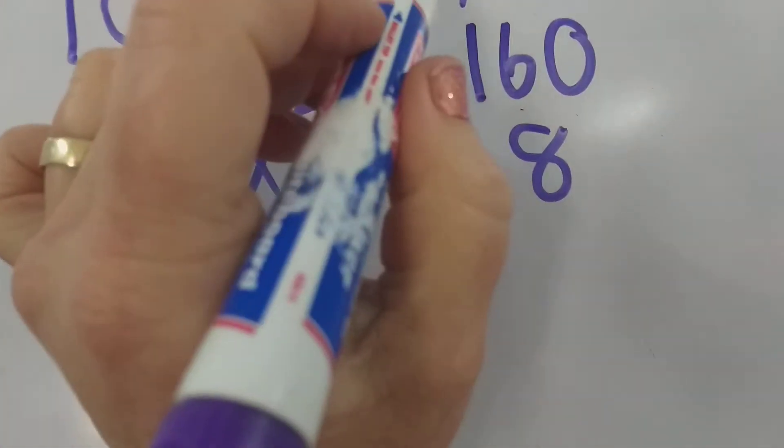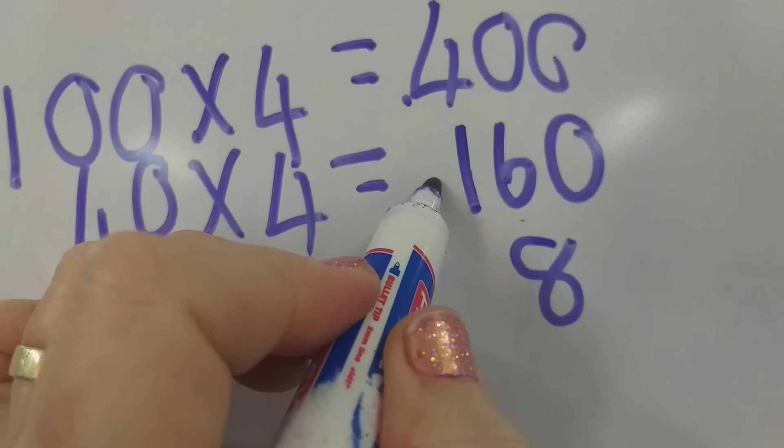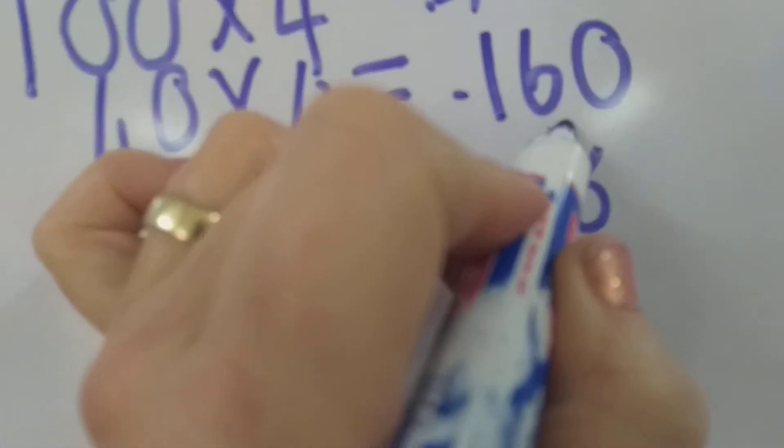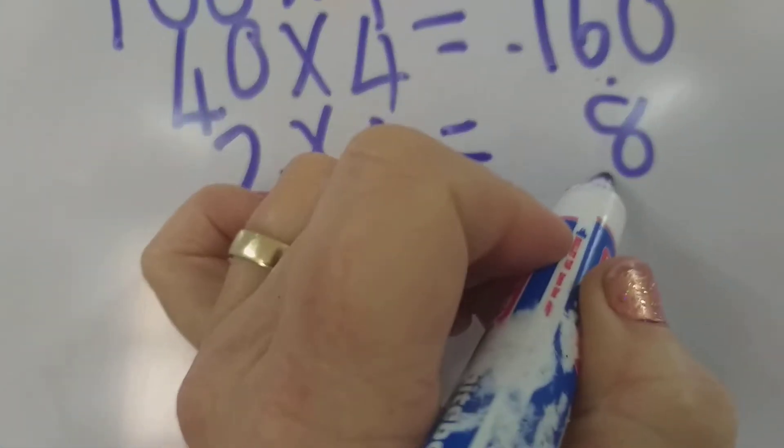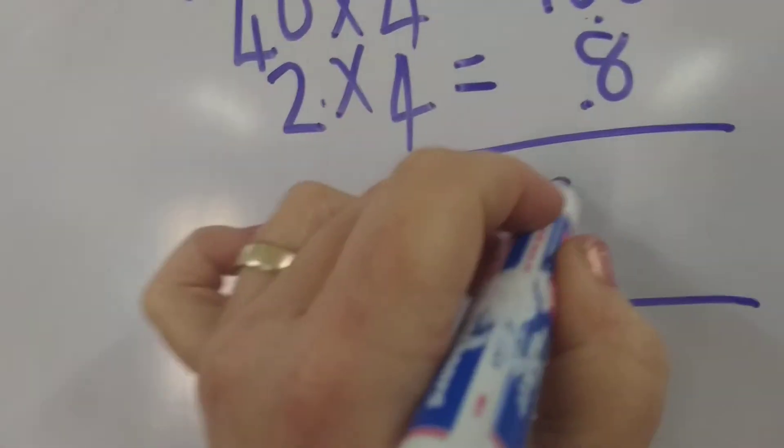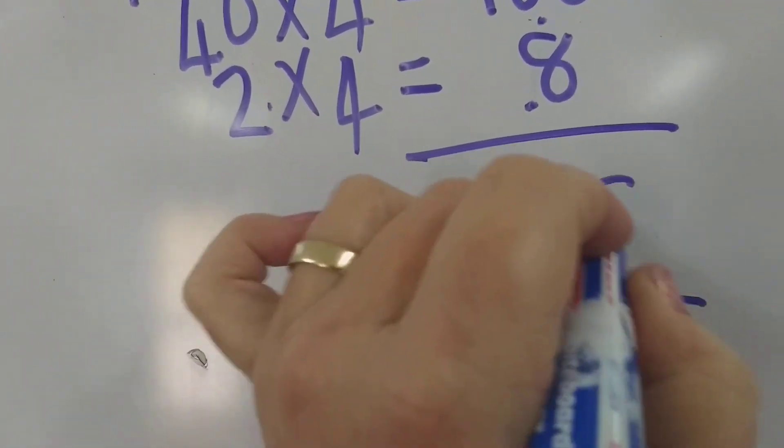400 plus another 100 is 500 plus 60. 560 is your answer for that one.